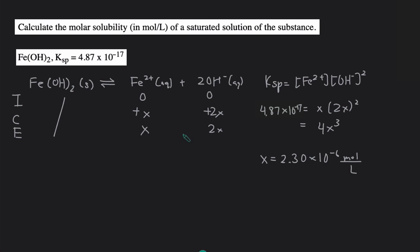And that will be the molar solubility. So 2.30 times 10 to the negative 6 moles of iron(II) hydroxide will dissolve per liter of solution.